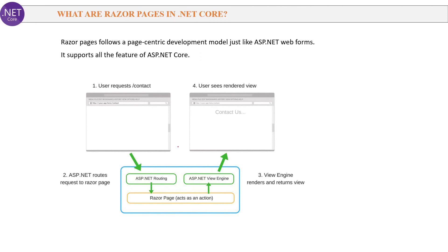Next question: What are Razor Pages in .NET Core? Like MVC, Razor Pages is another development model supported by .NET Core. Razor Pages follow a page-centric development model similar to ASP.NET Web Forms and support all features of ASP.NET Core. A request will come and based on the page name in the URL it will be redirected to the Razor page.